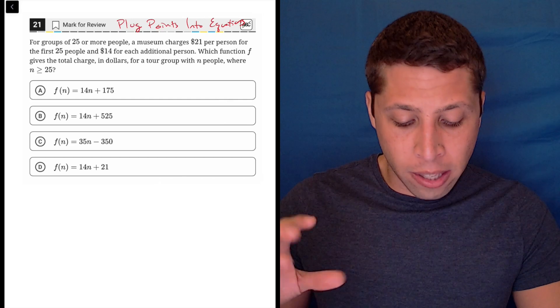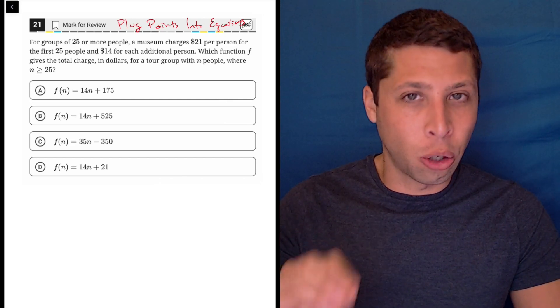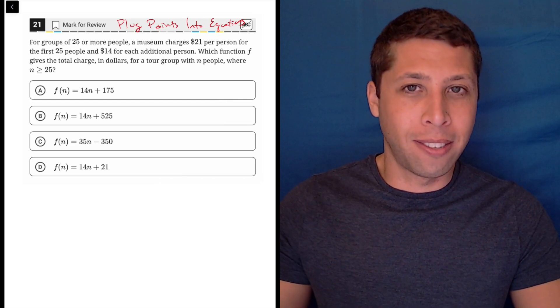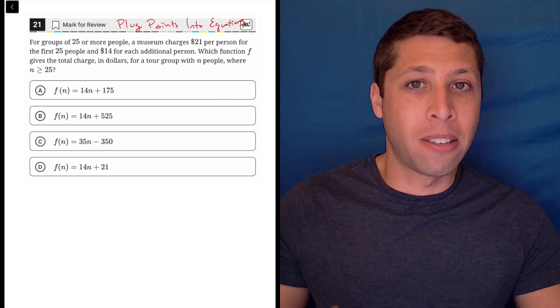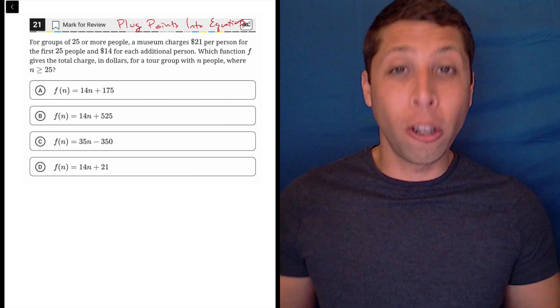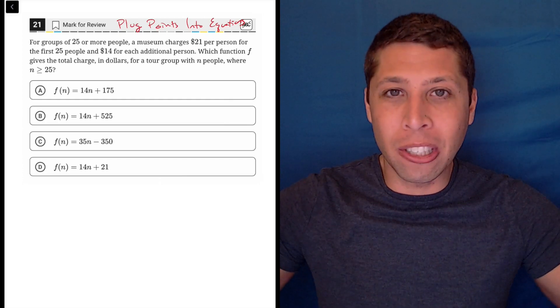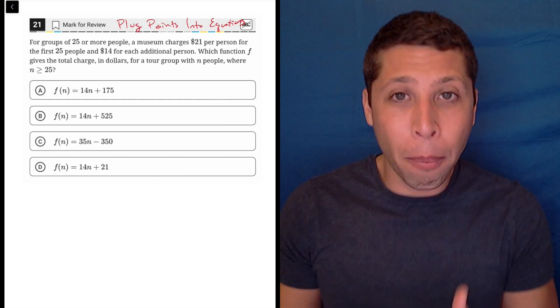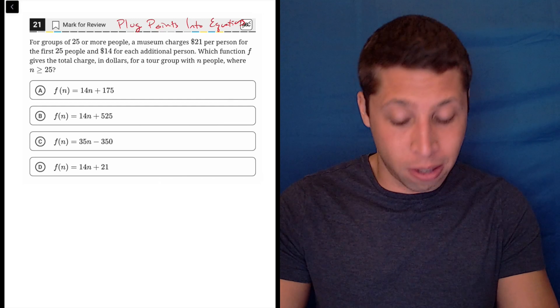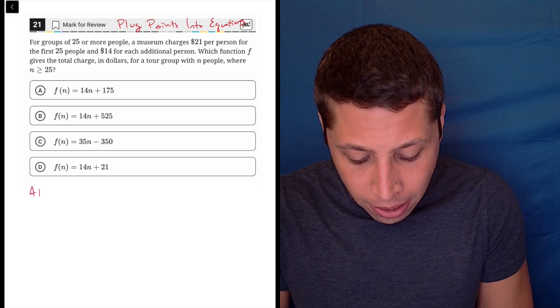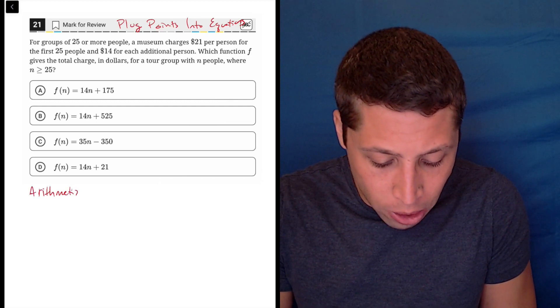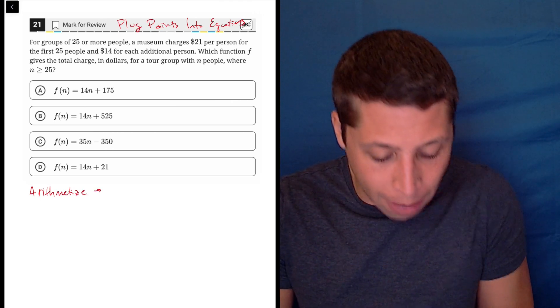So we don't know the specific number of people in a tour group because there's no specific tour group. This is an equation that's supposed to represent all tour groups, but if we want to understand the overall equation, why don't we just come up with a point, come up with a tour group? So this is plug points into equations with a little bit of an arithmetize. We don't have the point, we're making it up.